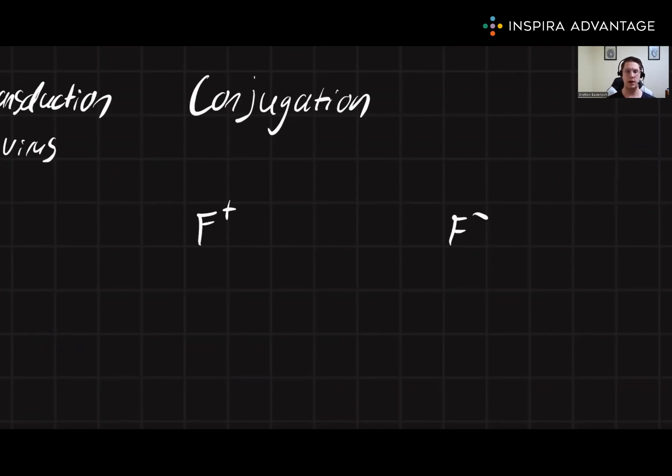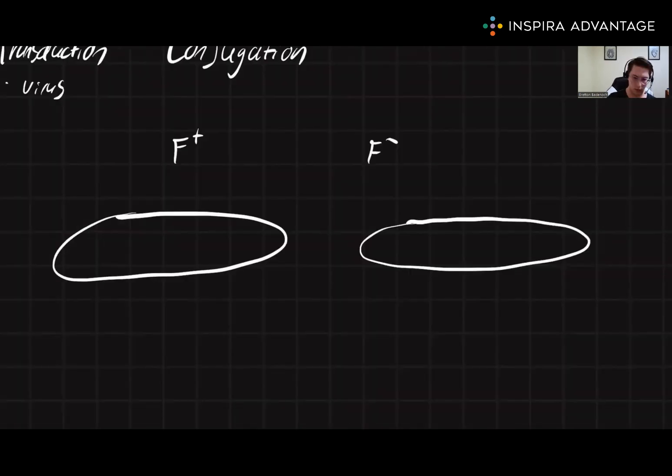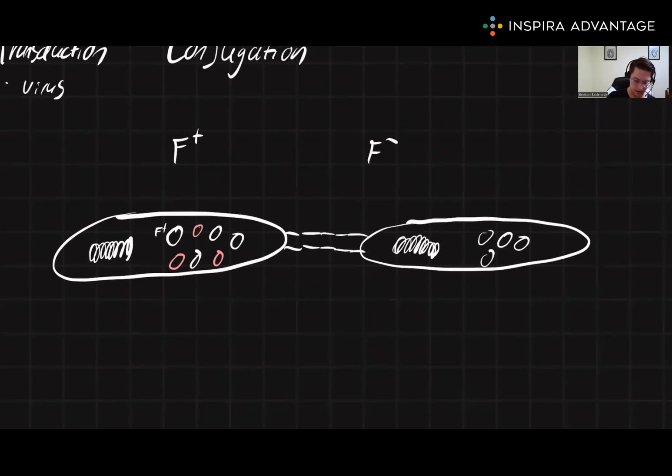The F refers to a portion of DNA called the F factor. If a bacteria is F positive, it just means that it possesses the F factor gene. An F factor bacteria will find an F minus bacterium and begin constructing a tube to pass along DNA. This tube is called the sex pilus.